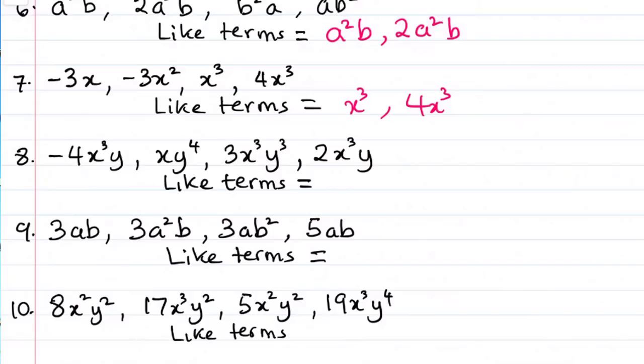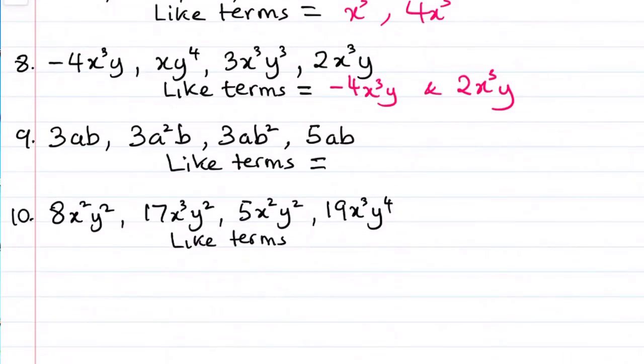Now number 8. Minus 4x cubed y, xy raised to the power of 4, 3xy cubed, and 2x cubed y. So we can see the first and the last on the list. So minus 4x cubed y, and 2x cubed y are similar. So those are the like terms.